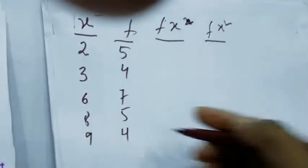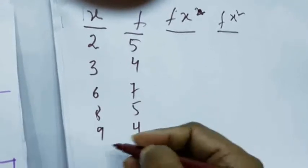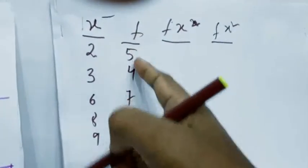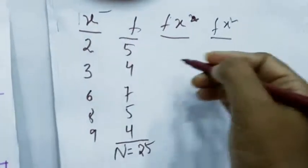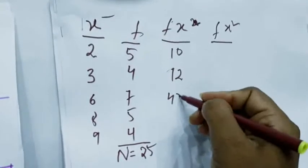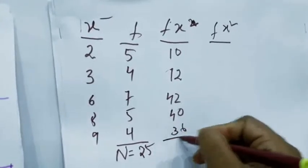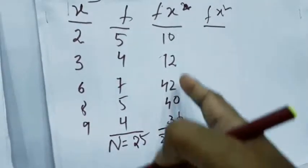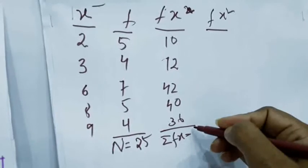What is the demand of the formula? Summation f x square by capital N — N means sum of frequency. What is N here? Sum of frequency, N equals to 25. And f x, that is f into x: it is 10, 12, 42, 40, 36. This is summation f x, and if we sum it up we will get 140.